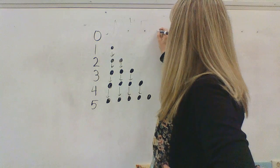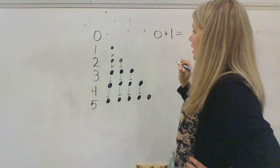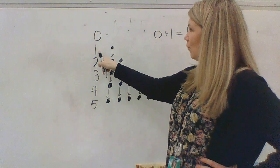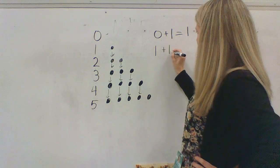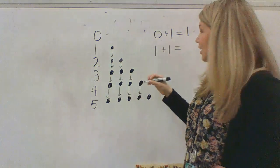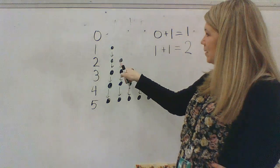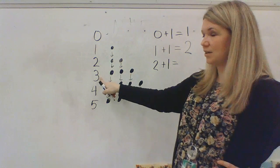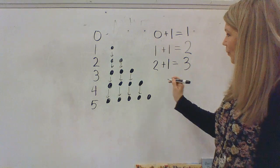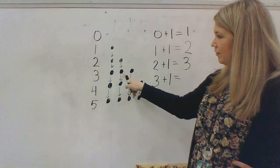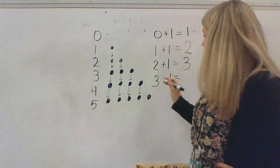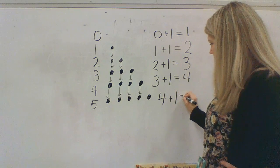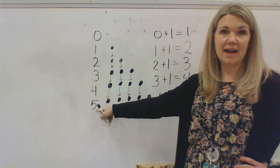So zero plus one equals one. What about one plus one? One plus one equals two. What about two plus one? Two plus one equals three. What about three plus one? I have three, I add one, I have four. What about four plus one? If I have four dots and I add one more, I have five.